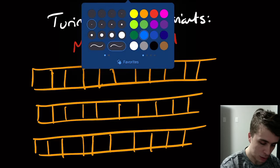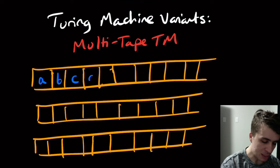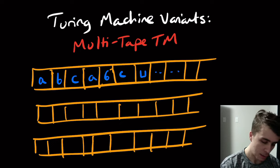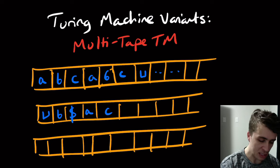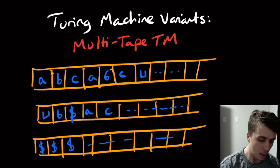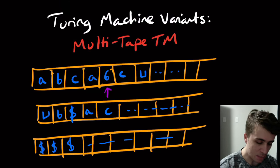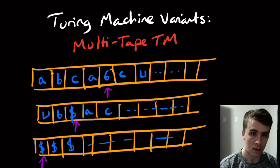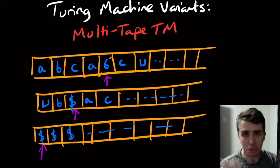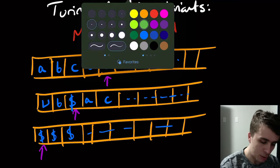What's going to go into each of these tapes? Let's say we have A, B, C, A, B, C, then blanks after that on the first tape. Maybe blank, B, dollar sign, A, C on the second. And something like dollar sign, dollar sign, dollar sign on the third — because I love money. We have tape heads that can be in arbitrary positions in these three tapes. It could be any number of tapes, but it's three in this case.